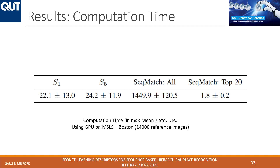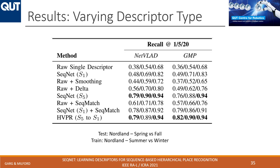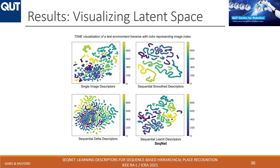Since we use a hierarchical approach, one of the main advantages is that we do not need to perform sequence score aggregation densely across the whole distance matrix, which gives significant computational gains. Additional results in the supplementary material show that varying sequence length can yield still better state-of-the-art results and that using a different underlying single-image descriptor also improves performance. The t-SNE visualizations show that the SeqNet sequential descriptors form a distinct pattern in latent space compared to delta descriptors, smoothing descriptors, or single-image descriptors.